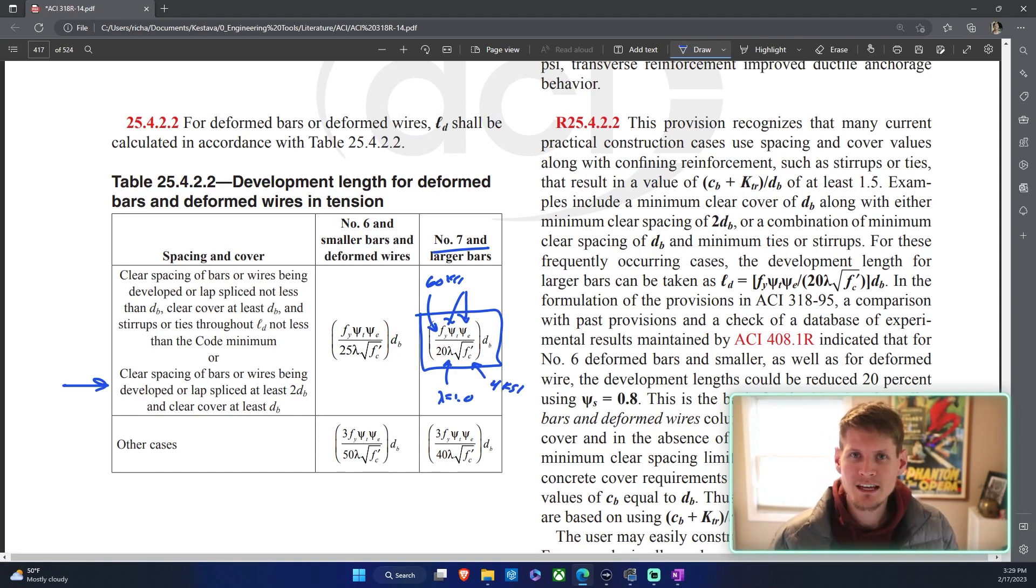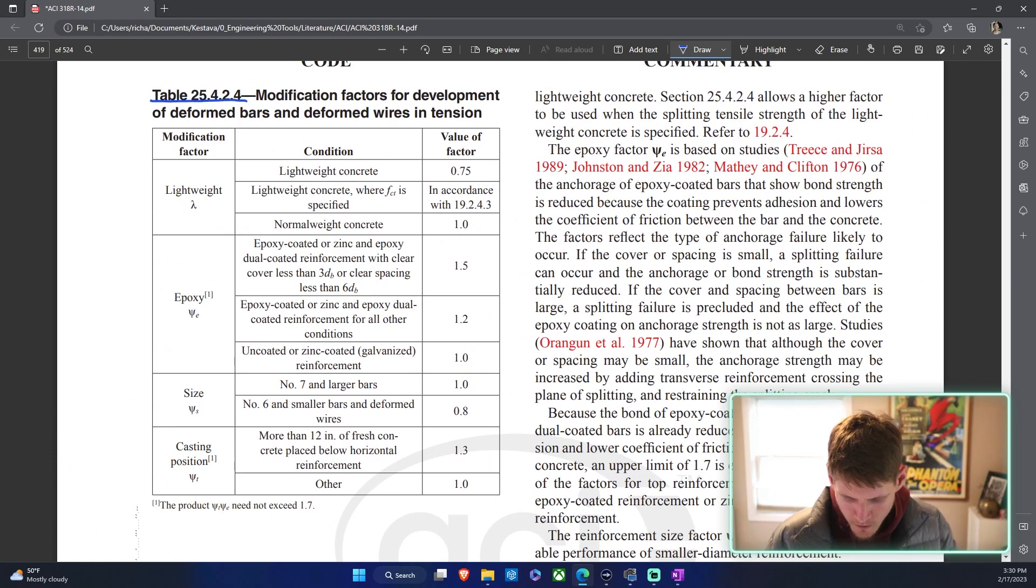So psi t, psi e, you're just going to move down two pages in the ACI and then you'll find your table. Let's head over. Boom, table 25.4.2.4, easy peasy. And there's your lambda lightweight 1.0. Psi e, it's epoxy, we have uncoated bars so it's just 1.0. And then psi t is casting position. And for this case we are going to be other with 1.0.